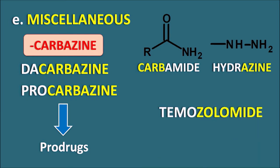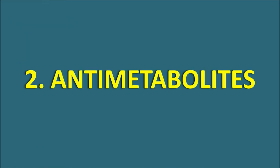Another drug in the miscellaneous alkylating agents is temozolomide. Its suffix '-zolamide' indicates a modified imidazolamide structure that also acts as an alkylating agent. These are the various drugs included in the first category of anti-cancer agents — alkylating agents.